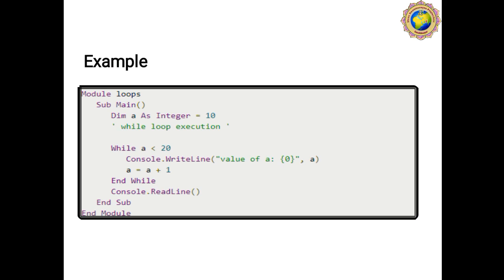In the While loop example, variable 'a' is declared as Integer and initialized with value 10. The While condition is 'a < 20'. Inside the loop, Console.WriteLine prints the value of 'a', and then 'a = a + 1' increments it. So the loop starts at a = 10, then 11, 12, 13, 14, continuing upward because 10 is less than 20.